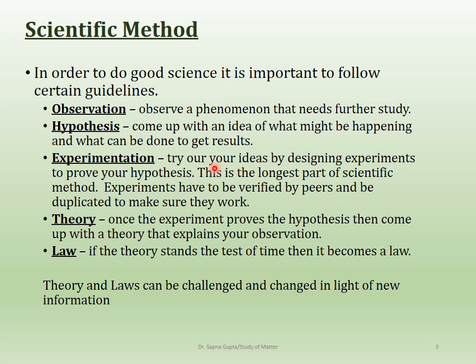Once you've done your experiment and proven your hypothesis, you can come up with a theory. If your experiment does not prove your hypothesis, you either change your experiment or change your hypothesis. Once your theory is established and has stood the test of time, it becomes a law — for example, the law of gravity.